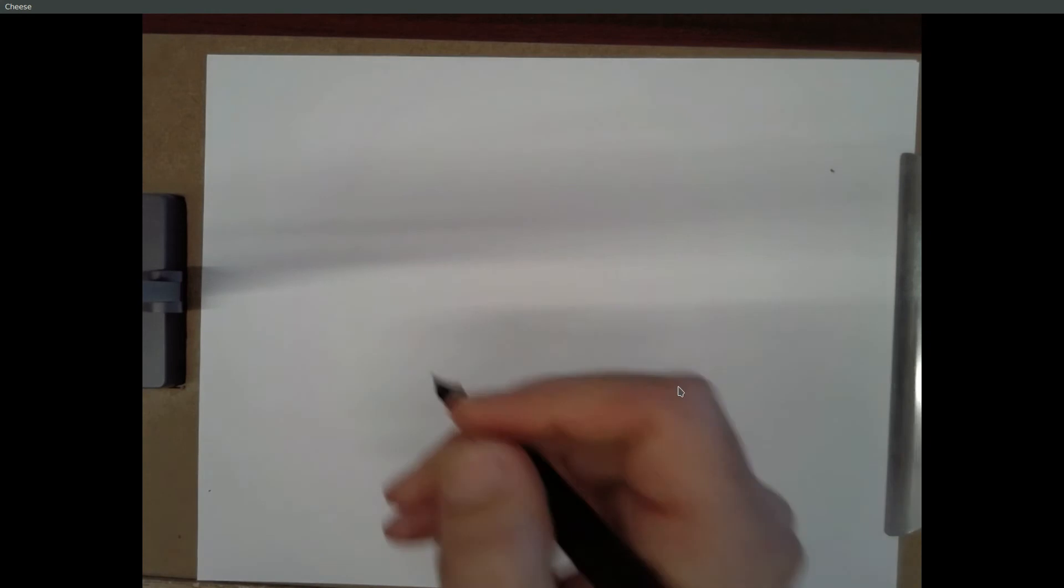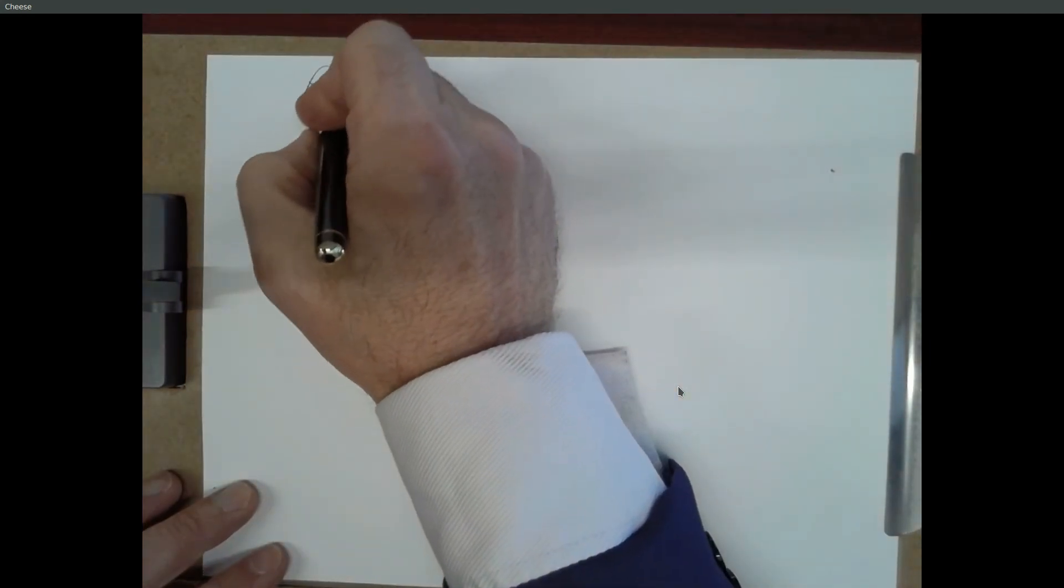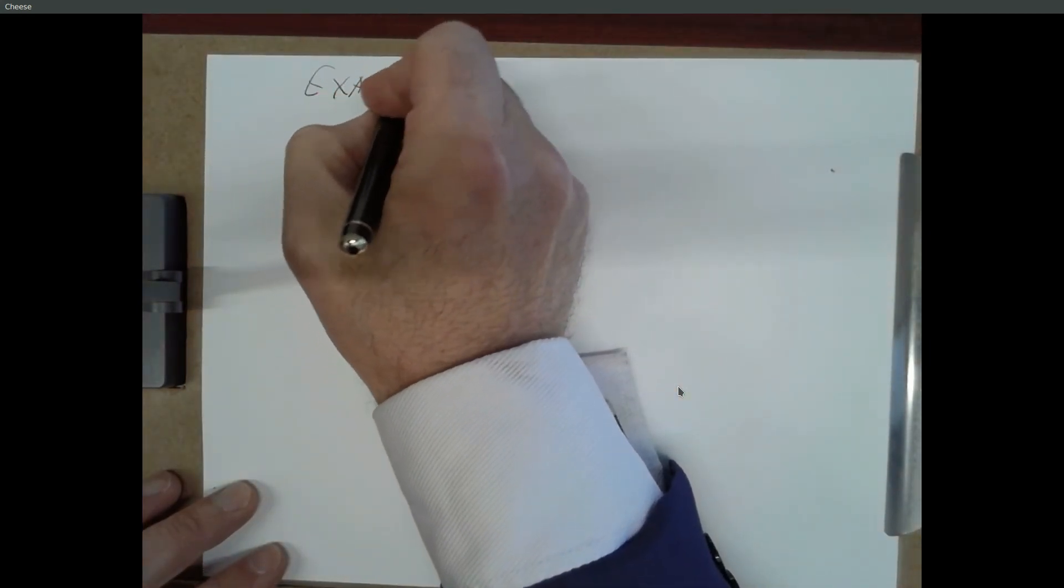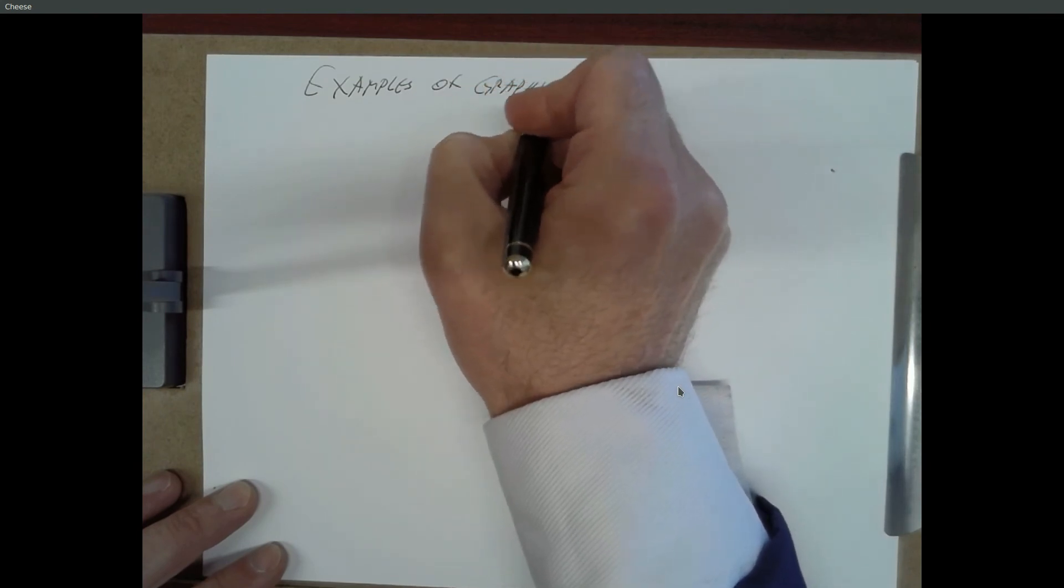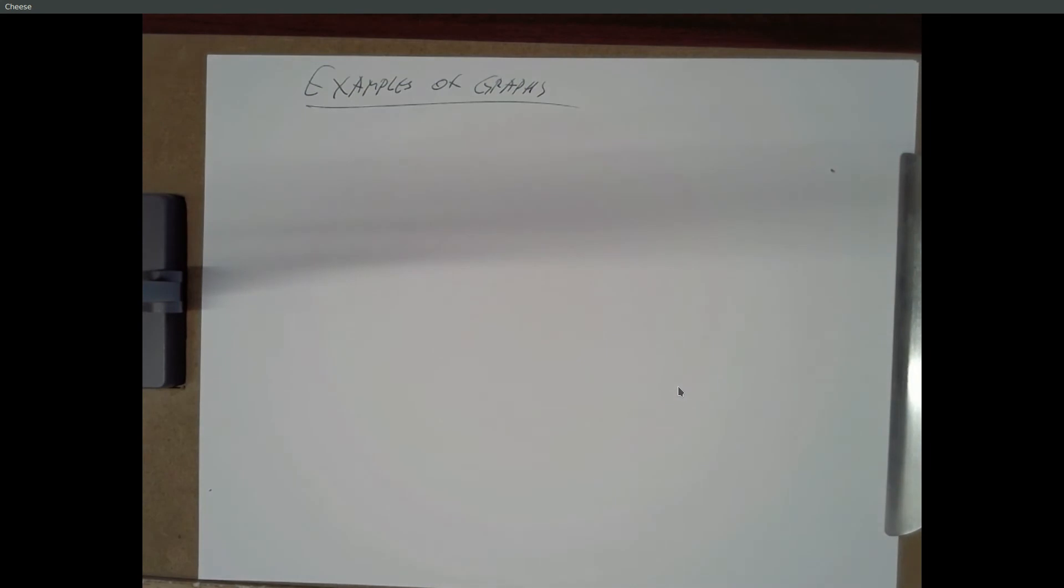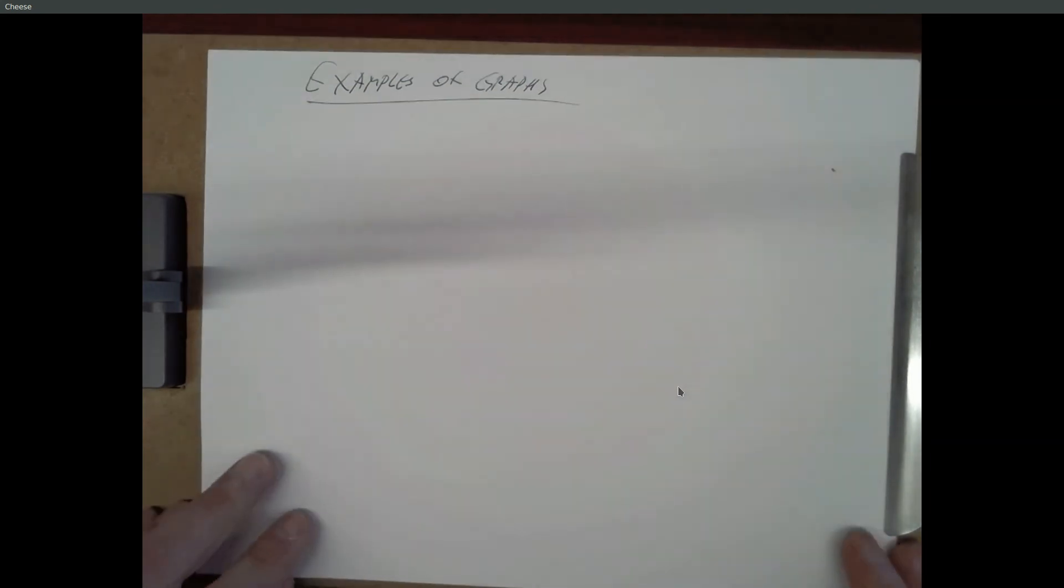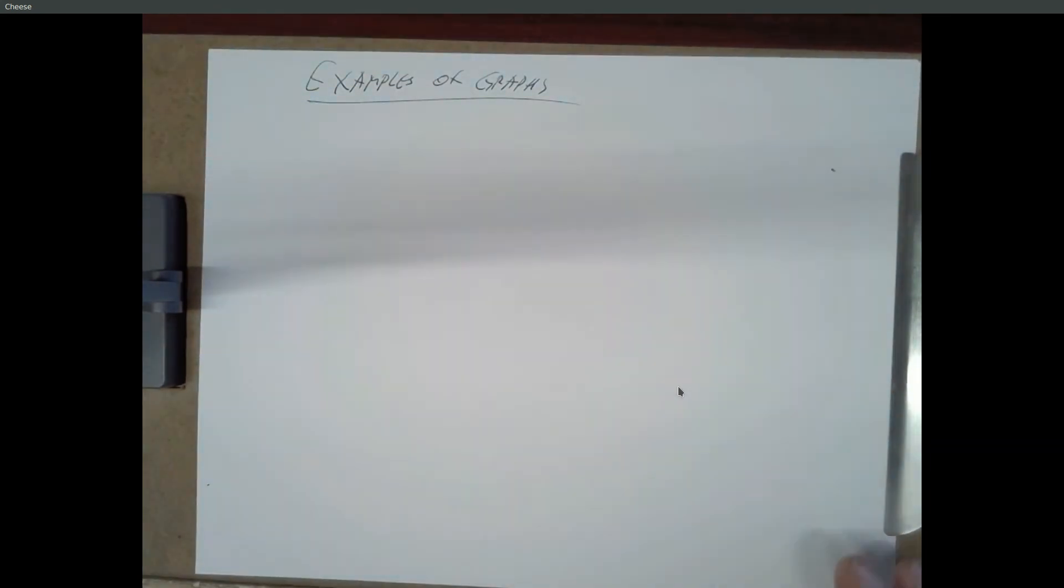All right. So, those are some useful theorems. All right. So, some examples of graphs. Because I can draw random graphs. But there's some standard graphs we can use that will be useful to refer to.